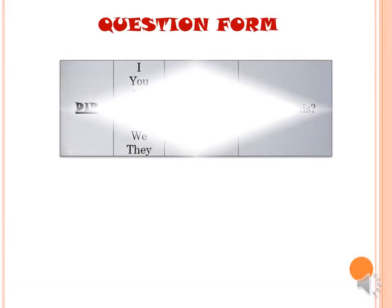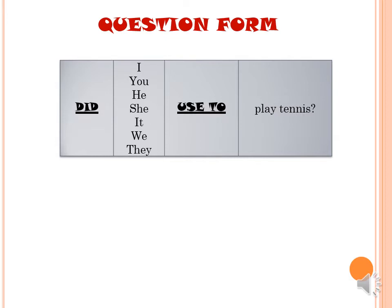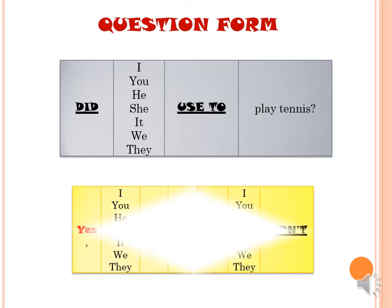Question form. Did I used to play tennis? We start the question with 'Did', followed by the subject — I, you, he, she, it, we, or they — then 'used to', followed by the verb and object (Verb 1). The answer should be yes or no: 'Yes, I did' or 'No, I didn't'; 'Yes, he did' or 'No, he didn't.'